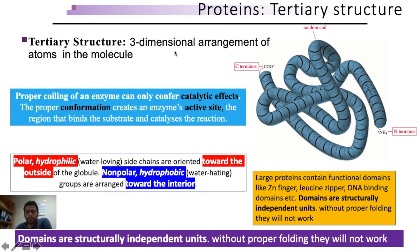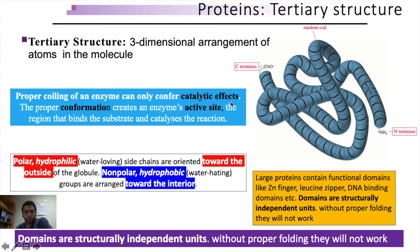The tertiary structure is a three-dimensional arrangement of the polypeptide backbone, giving the protein its proper folding. This conformation is important for the activities of various enzymes. Proper coiling of enzymes confers their catalytic effects. Without this folding, no conformation and exposure of the active site would be possible, and in the absence of an active site, no ligand could bind to the protein — hence no functions could be performed. So folding is very vital for the functionality of the protein.